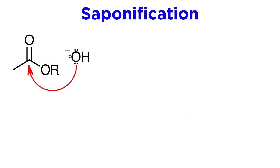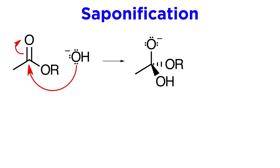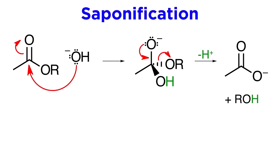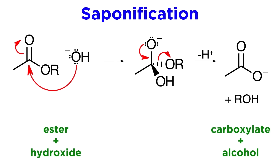With this, the hydroxyl attacks the carbonyl. The pi bond gets pushed up, then the carbonyl forms again, but this time the alkoxide is pushed off. Finally, the alkoxide takes the acidic carboxyl proton, so a carboxylate will remain in solution until aqueous acidic workup.